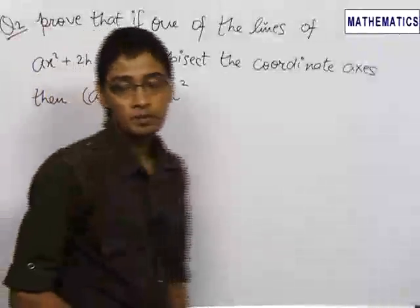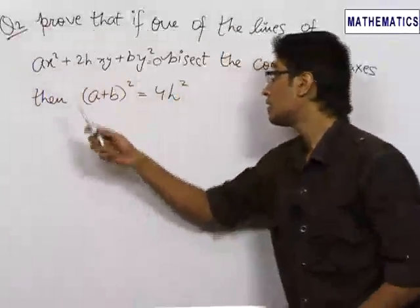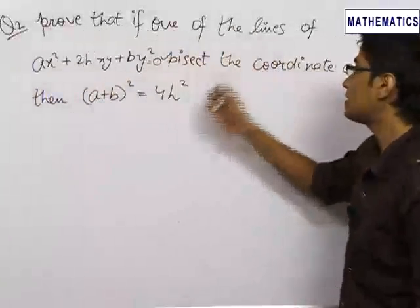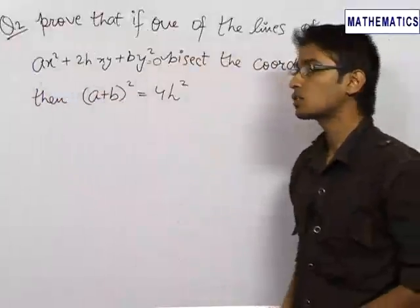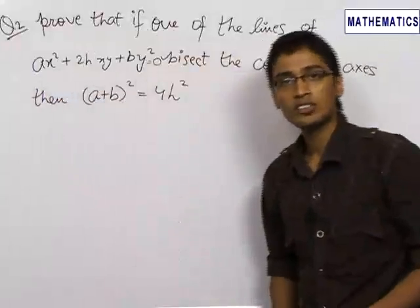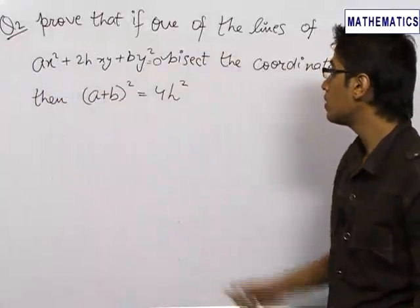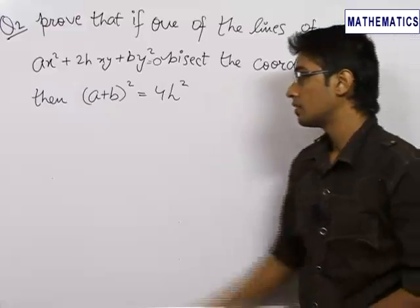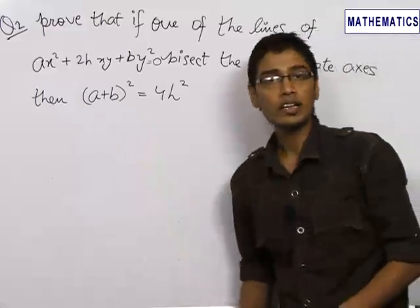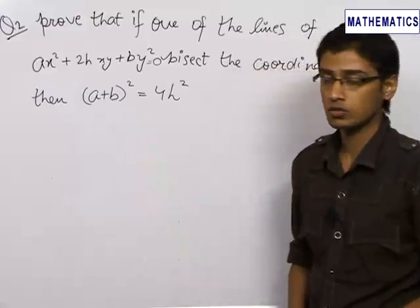In our second problem, we need to prove that if one of the lines of the combined equation of lines A x squared plus 2h xy plus b y squared equals 0 bisects the coordinate axis, then we need to prove that (A plus B) whole square equals 4h squared.